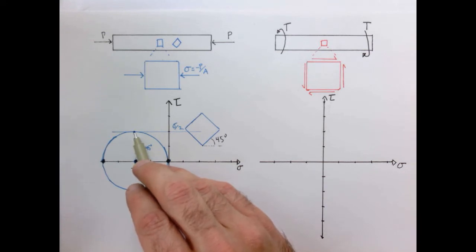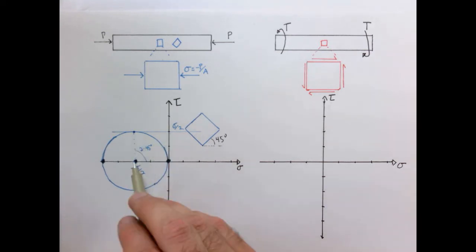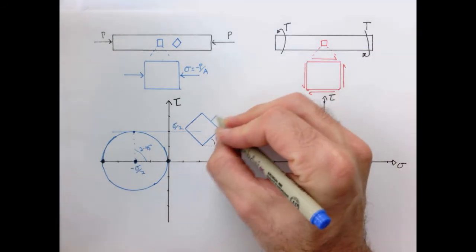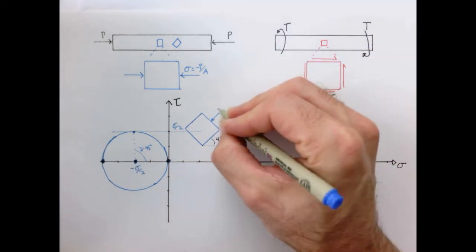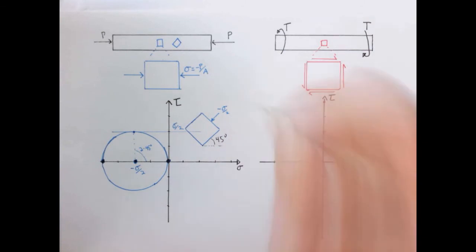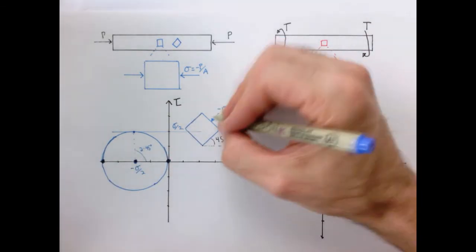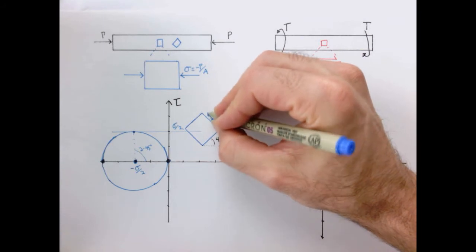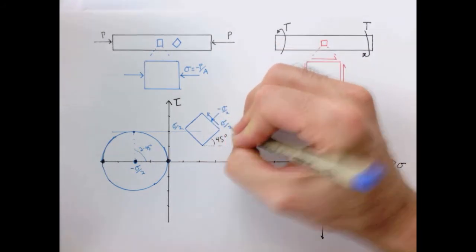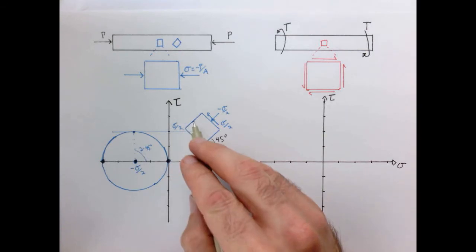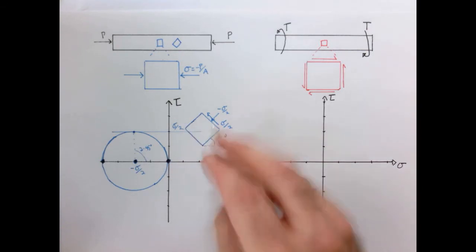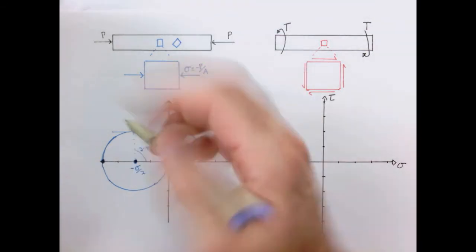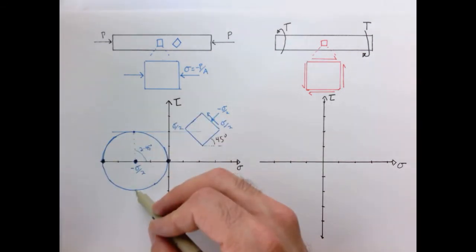So here's our element tilted at 45 degrees to represent the point right here. And our state of stress, we see we have a negative compressive stress of sigma over two. We have a positive shear stress wanting to rotate the element counterclockwise, also of magnitude sigma over two. The state of stress on this face, which would be what we would get if we rotated another 90 degrees or 180 degrees on the circle is just the opposite side.